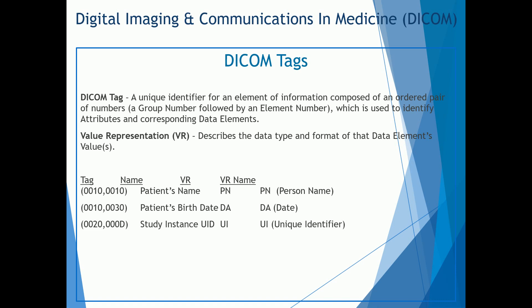The VR, or value representation, describes the data type and format of that data element's value. When looking at the DICOM standard, if you see PN, that describes person name. DA is for date, and UI is for unique identifier. You'll be able to see these different data types for all the different DICOM tags.